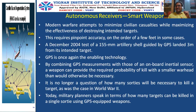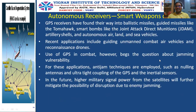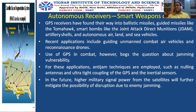GPS-equipped weapons are now adopted by many countries. Autonomous receivers include Joint Attack Direct Munitions — JDAM. GPS receivers found their way into ballistic missiles, guided missiles, and smart bombs like JDAM and Tomahawk. Artillery shells, autonomous air, land, and sea vehicles are also equipped. Recent applications include guiding unmanned combat air vehicles and reconnaissance drones — with no pilot onboard — as a major advantage of GPS.